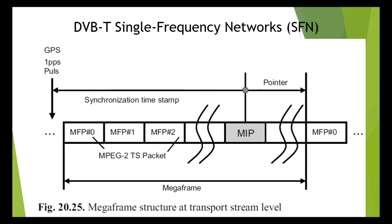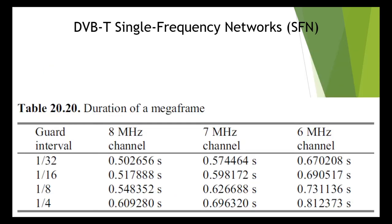Look at table number 20. In table 20, I have given the duration of a mega frame — it contains a list of the exact lengths of one mega frame based on the guard interval for 8 MHz, 7 MHz, and 6 MHz channels.